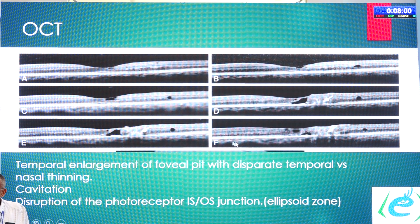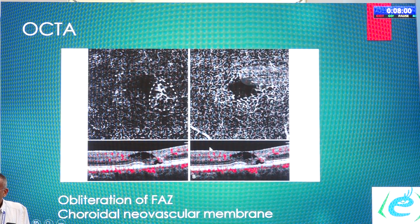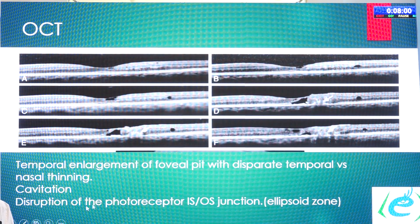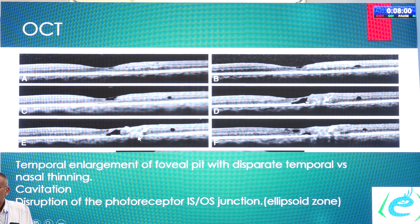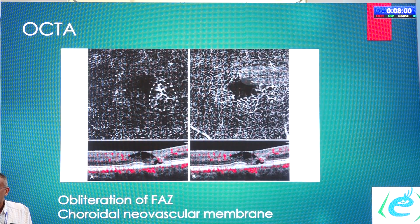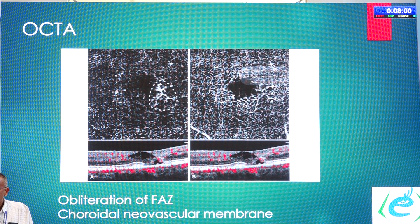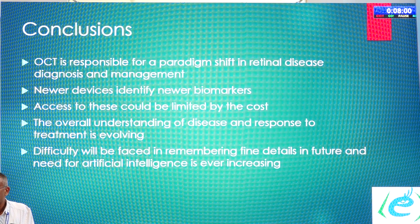There is disruption of the photoreceptor IS/OS junction or the ellipsoid zone. In one of the morning sessions, people identified early changes that will ultimately lead to neovascularization — the double layer sign — which has also been identified in OCT photographs of MacTel Type 2. On OCTA, we will see obliteration of the FAZ and subretinal neovascular membranes.